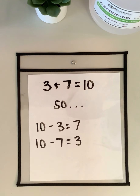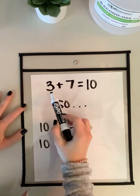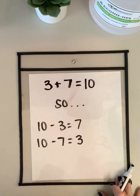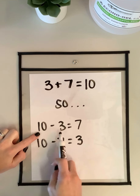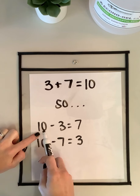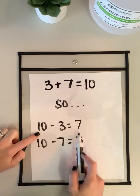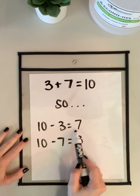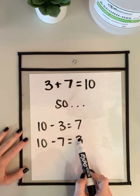Let's look at a different example. I know that if 3 plus 7 equals 10, I can use my subtraction 10 partners starting with 10 and taking a one-digit number away from it. 10 minus 3 equals 7. When I switch my 10 partners, 10 minus 7 will equal 3.